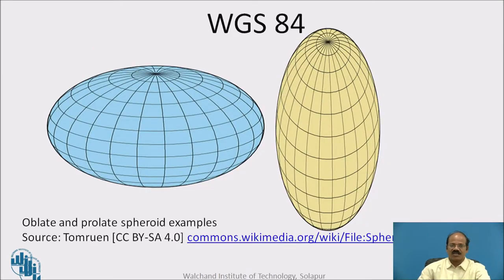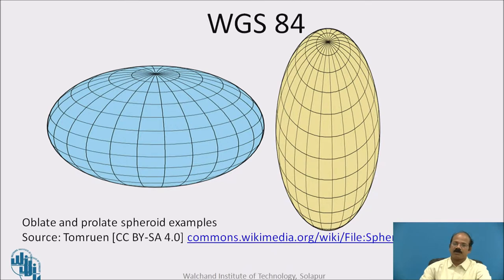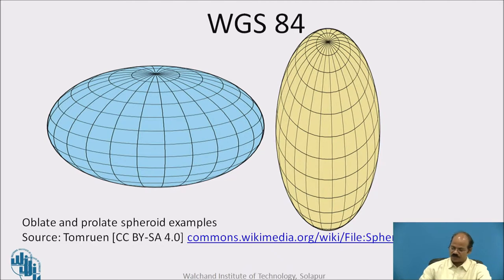Regarding geodetic coordinates — all of us are familiar that there are planar coordinates wherein X and Y coordinates are used. In geodetic coordinates, however, we are working on the surface of earth, which is a sphere, so spherical trigonometry plays a major role. WGS84 is the most reliable coordinate system with which we can get an exact idea of how positioning is done.